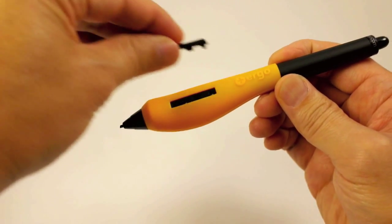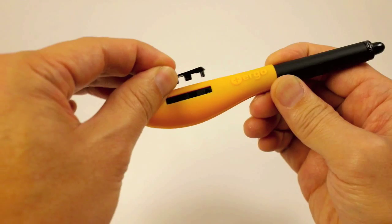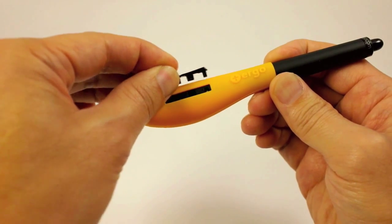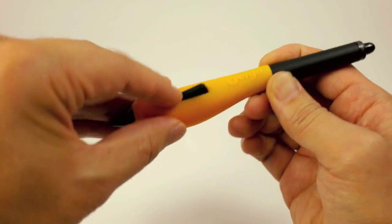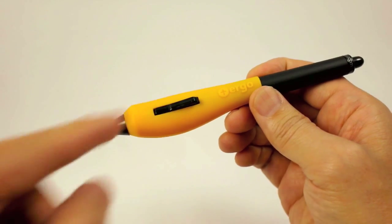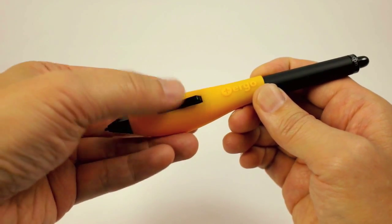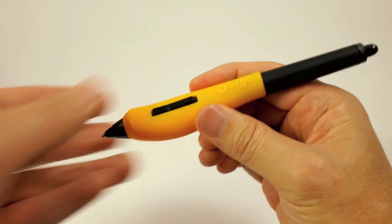The final part of the assembly is to reinsert the button. Align the buttonholes to the button. Make sure that the short edge of the button is facing the tip and the long edge is facing the back. Gently insert the button into the slot.